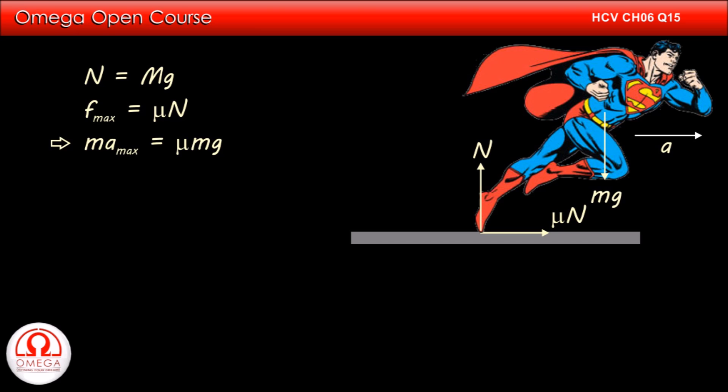If a max be the maximum possible acceleration of Superman, then m into a max is equal to μmg. Which implies a max is equal to μg, or 0.9 into 10, that is 9 meters per second squared.